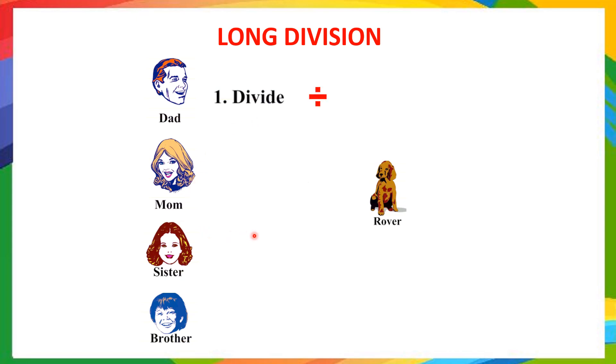Like M for mom. Mom multiplies. She multiplies everything, whatever has been given. M for multiply. This is the second step in the long division.